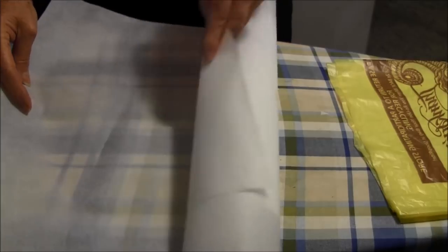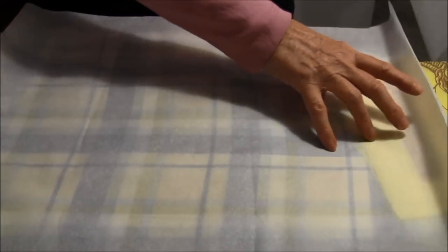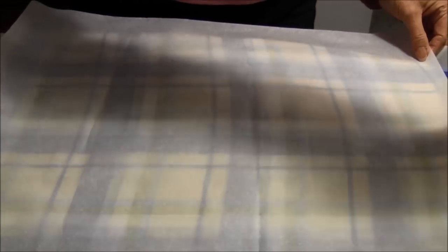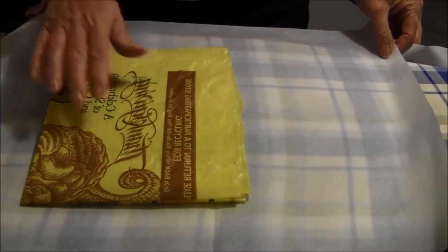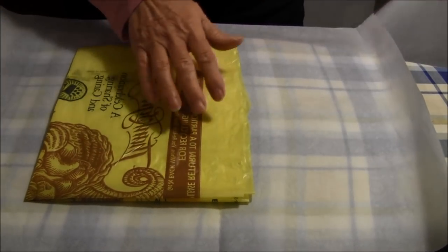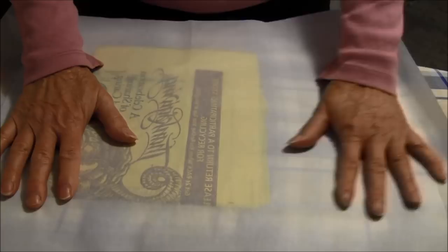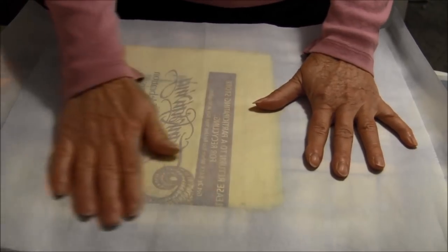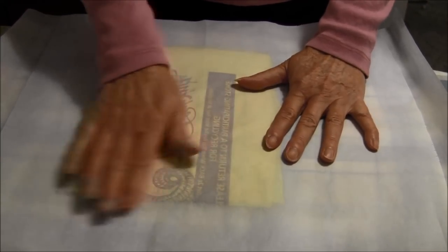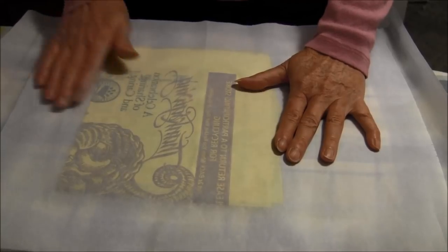I'm using some parchment paper. However, you can use a brown paper bag, craft paint, brown craft paper, whatever you happen to have in the house. You'll layer your plastic bag in between it. That is so that it doesn't stick.